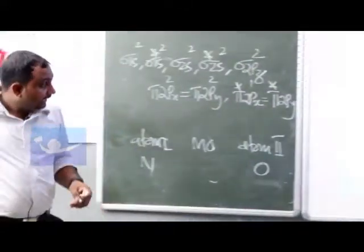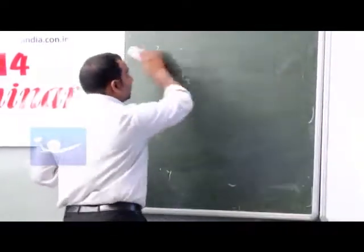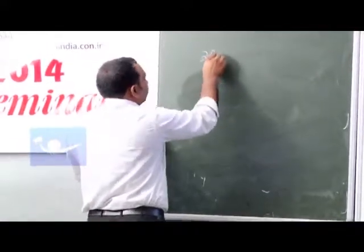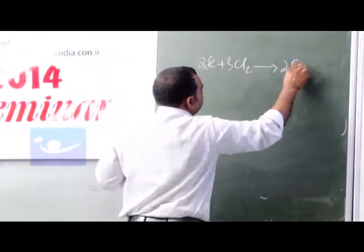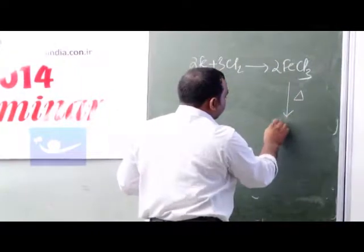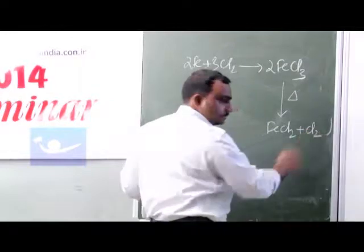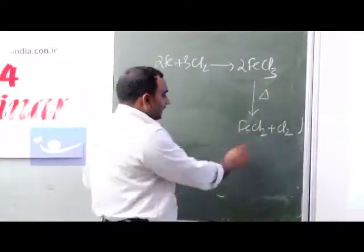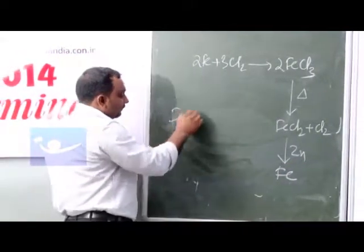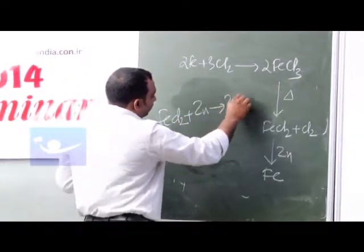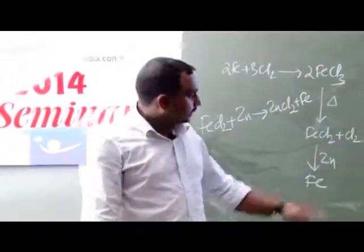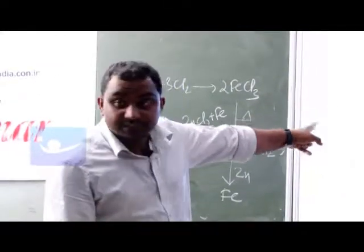So if you are treating Fe with chlorine, if you are heating iron with chlorine, you will get 2Fe + 3Cl₂ gives 2FeCl₃. And if you heat it, it will decompose to FeCl₂ plus chlorine. And in presence of zinc, if you heat it again, you will get iron. What will happen is from FeCl₂, zinc will be absorbing chlorine, so ZnCl₂ plus Fe. So the only feasible reaction is option B.